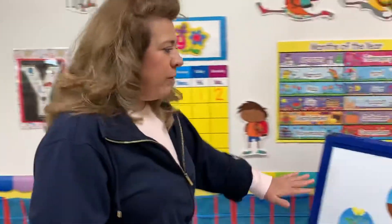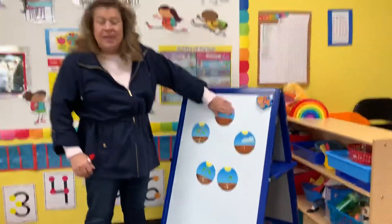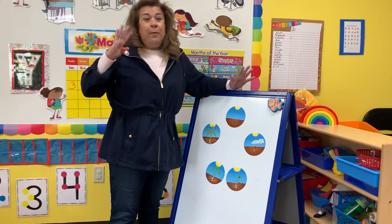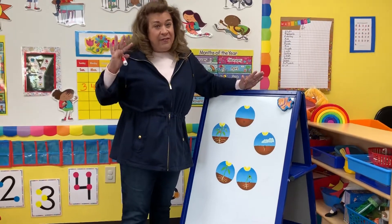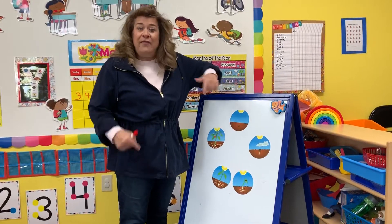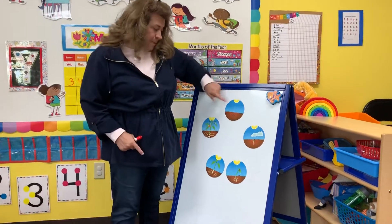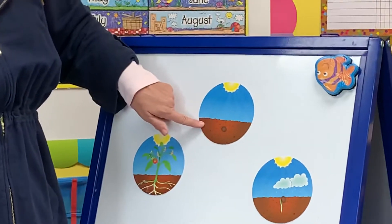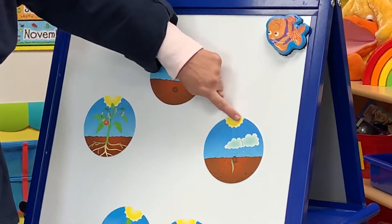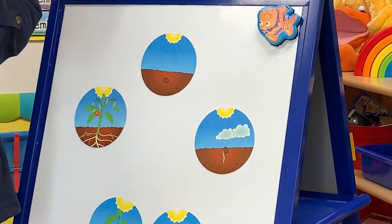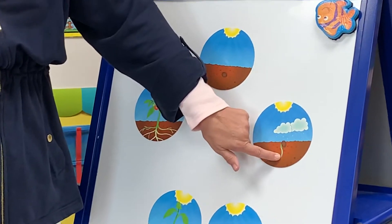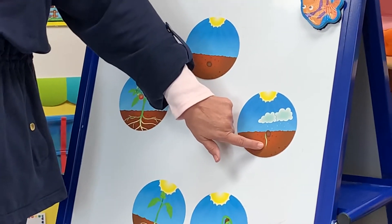I'd like to do a quick review of the plant life cycle. Last week we talked a lot about the parts of a flower and the parts of a plant. This is just a review of the life cycle of a plant. It starts with the seed down in the dirt, getting all the sunshine it needs — sunshine, rain — and the seed coat breaks open and out pops the little root, the first root that comes out.